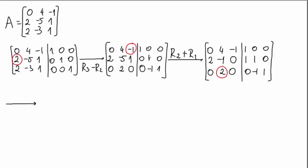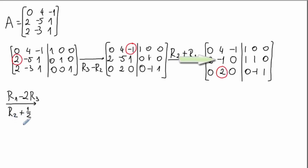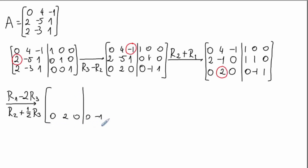We need two operations: R1 minus 2·R3 (since 4 minus 2 times 2 gives 0), and R2 plus one-half of R3 (since negative 1 plus half of 2 gives 0). Starting with the unchanged third row, then R1 minus 2·R3 gives: 0 minus 0, 4 minus 4, negative 1 minus 0, 1 minus 0, 0 minus 2 times negative 1 which is 2, and 0 minus 2 times 1 which is negative 2.